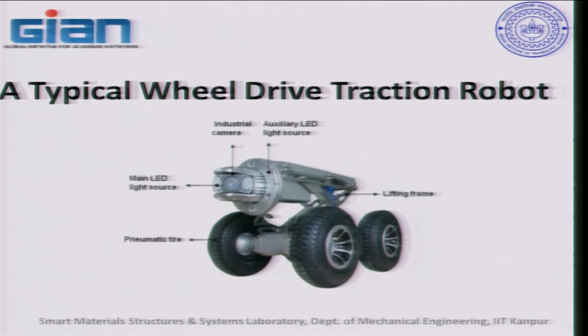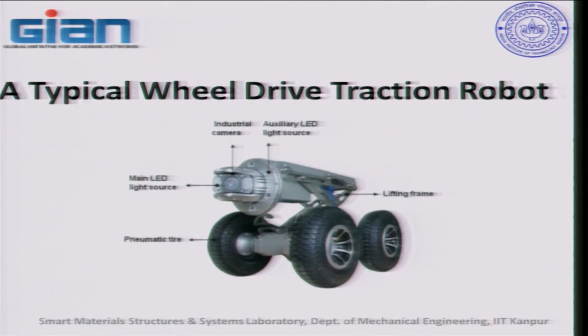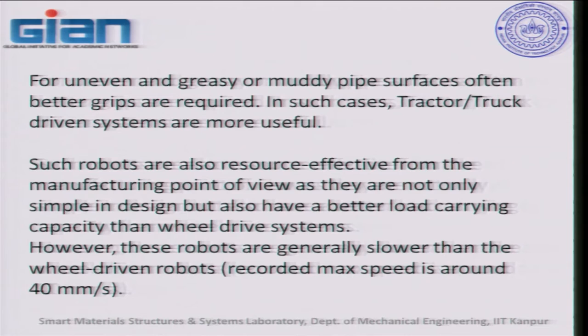A typical wheel-drive traction robot has an industrial camera system with LED light sources for illumination, auxiliary LED light sources for when damage is found, a lifting frame to get a better view, and pneumatic tires to run along the pipe surface and capture video images. For uneven, greasy, or muddy pipe surfaces, this type of tired system may not be suitable, so a different type of traction is needed — a tractor or truck-driven system.